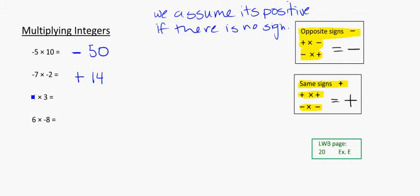Next example, 4 times 3. Well, there's no sign written, so I can assume that those are both positive numbers. So that's positive 4 times positive 3. It's going to give me a positive, because they're the same sign. And we can say that's 12. 4 times 3 is 12.